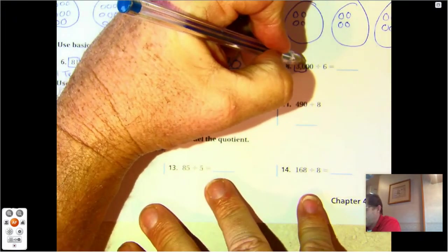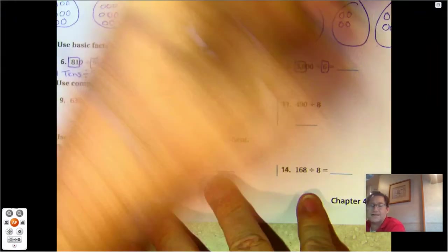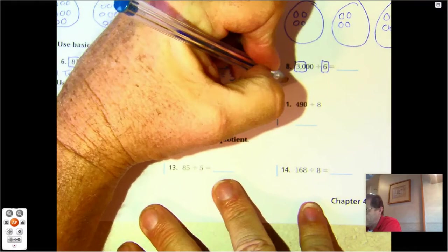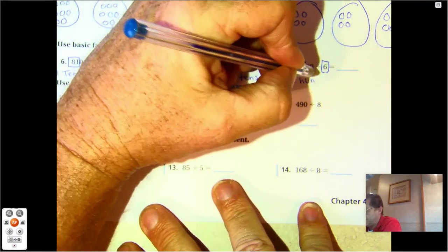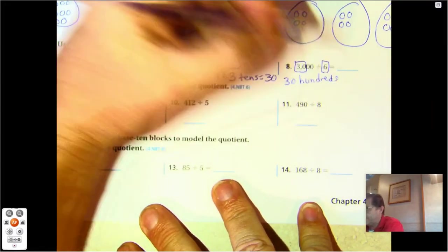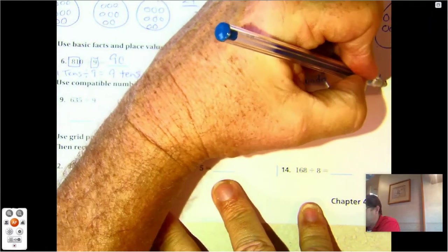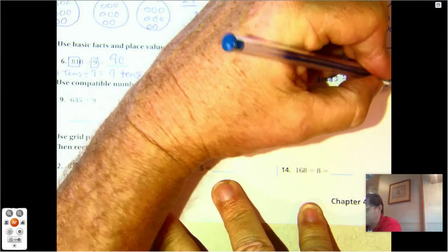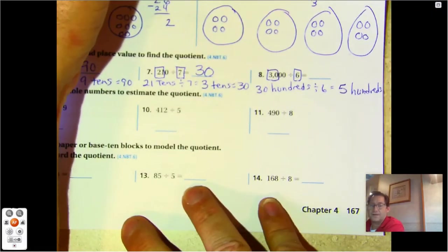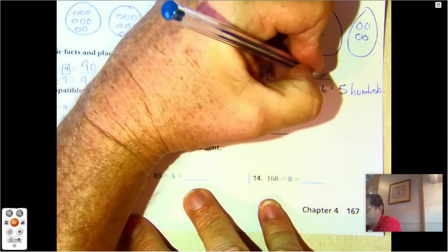Number eight. The basic math fact is 30 divided by six. In this case, we have 30 hundreds. 30 hundreds divided by six: 30 divided by six is five. So five hundreds, and five hundreds is 500.